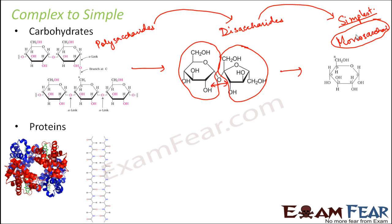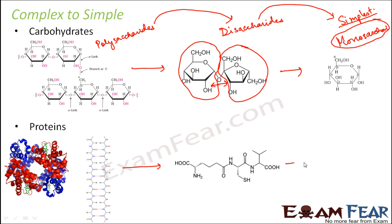Similarly, when we talk about proteins, many amino acids are joined together by various types of peptide bonds and some hydrogen bonds. These proteins are nothing but polypeptides — there are several peptide linkages between several amino acids. They in turn get converted into dipeptides, which in turn get converted into amino acids, the basic building block of proteins. There are 20 amino acids in nature, and by their combination so many proteins are built.